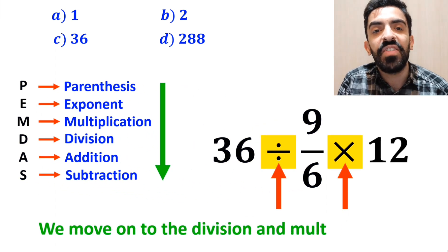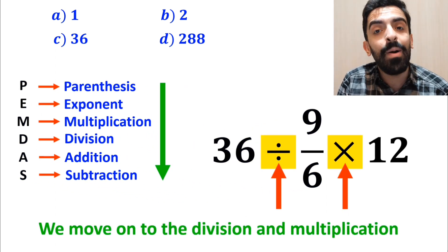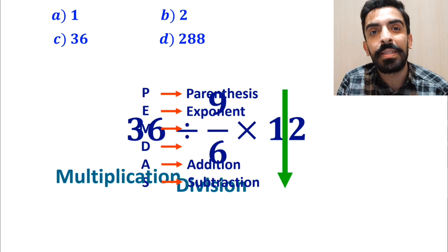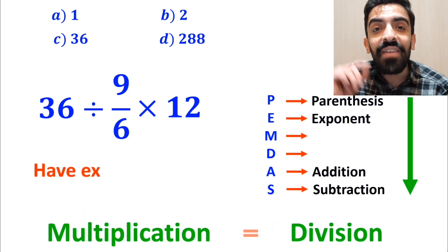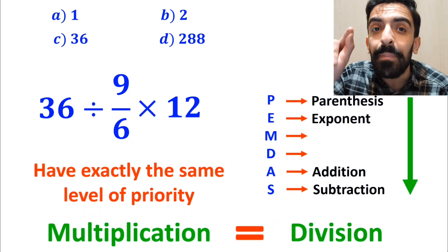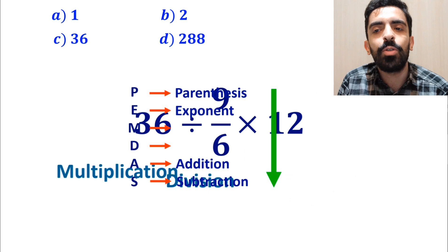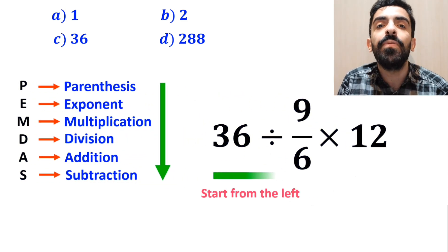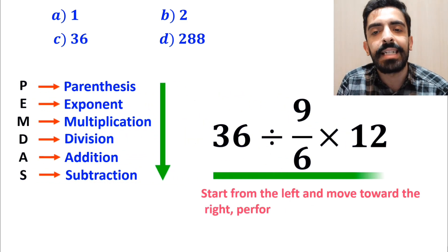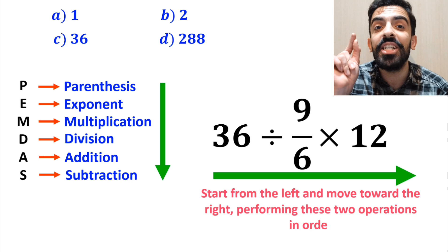And the next step, we need to move on to the division and multiplication. However, it's very important to note that multiplication and division have exactly the same level of priority in the PEMDAS rule. In this situation, the best approach is to start from the left and move toward the right, performing these two operations in order.